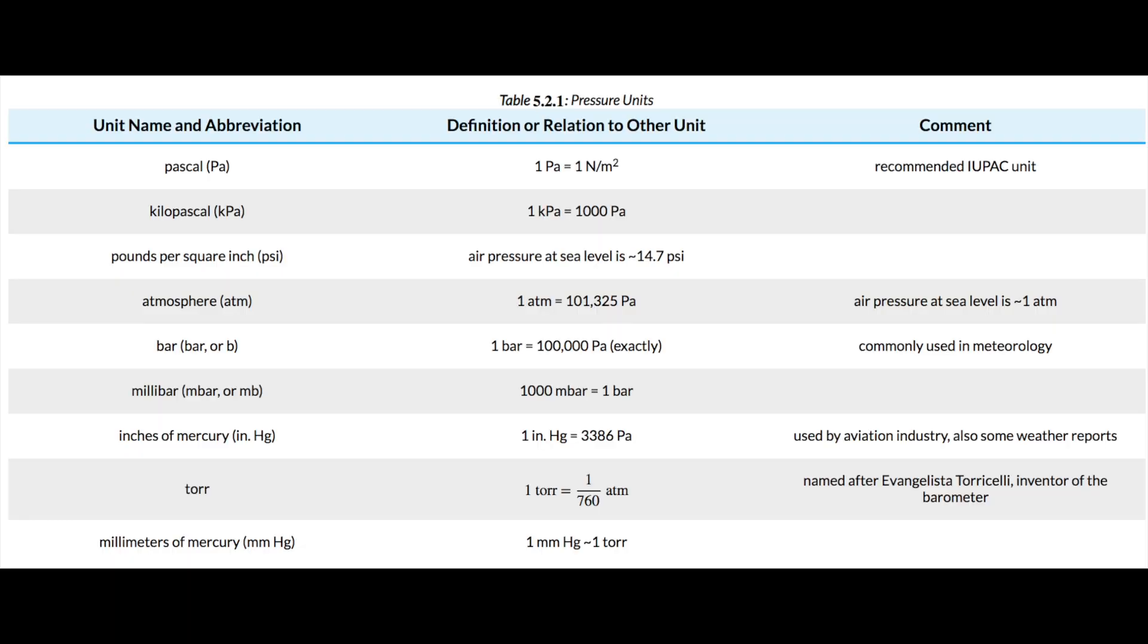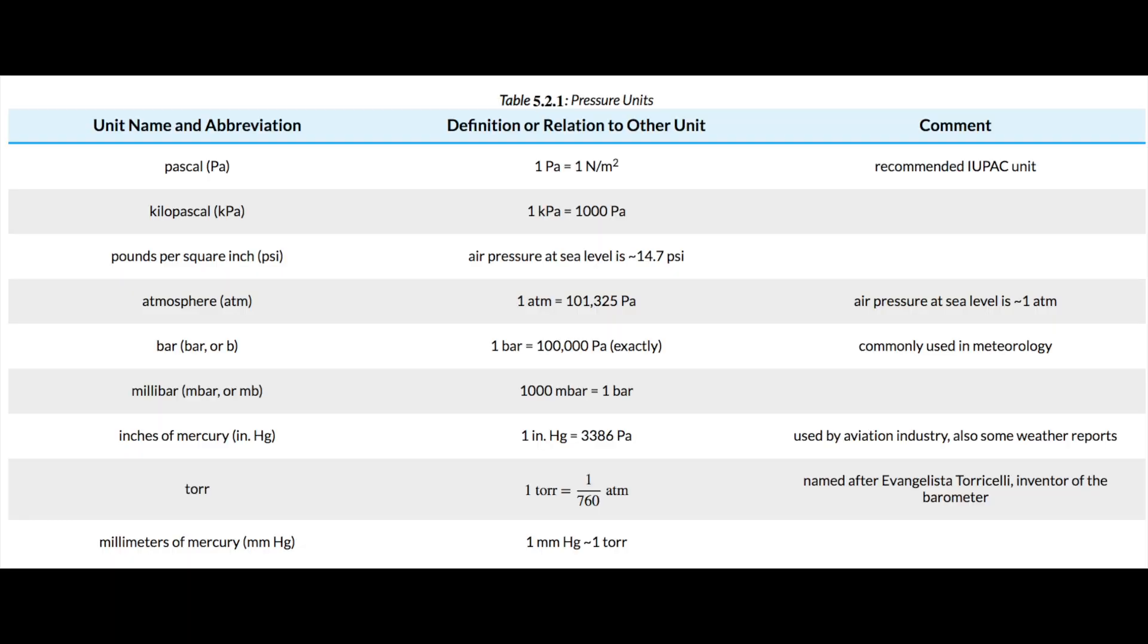Pressure uses several different units, such as millimeters of mercury, pascal, torr, bar, atmosphere, and PSI. These units are all used to describe pressure and here are some conversions between these units.